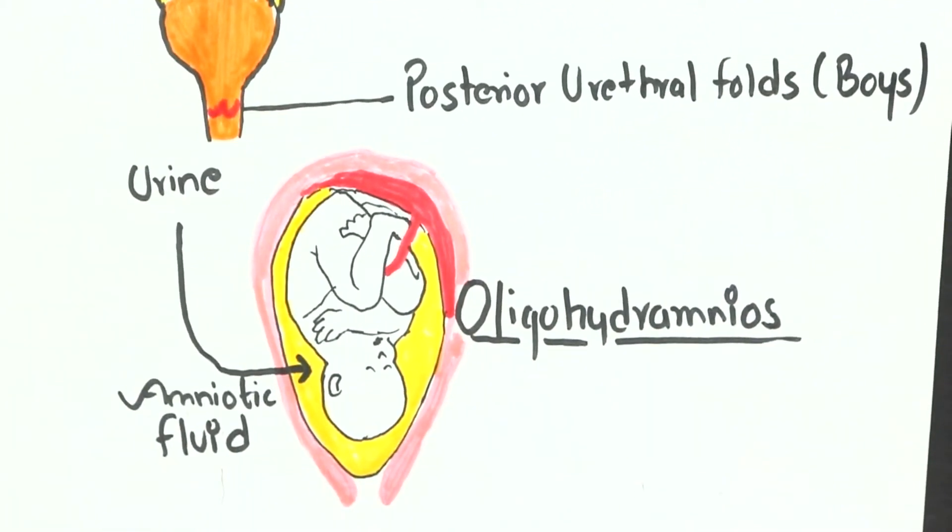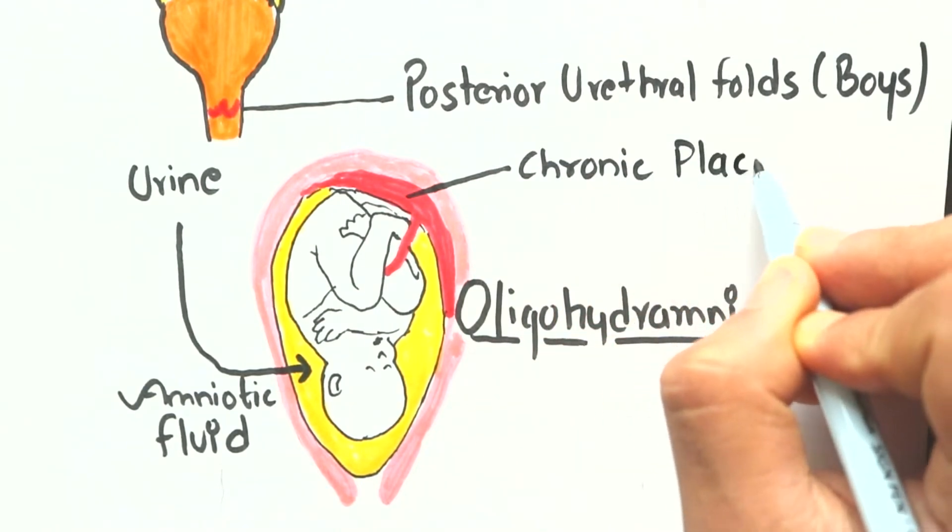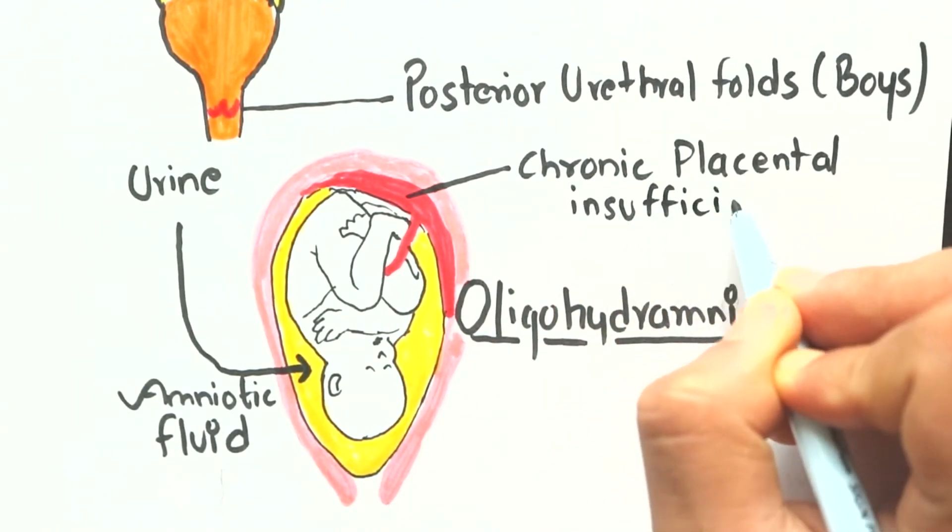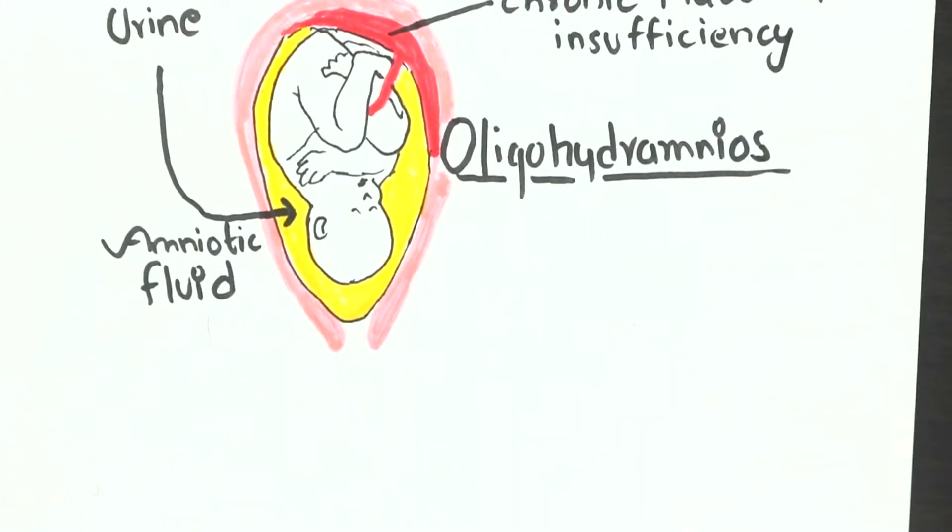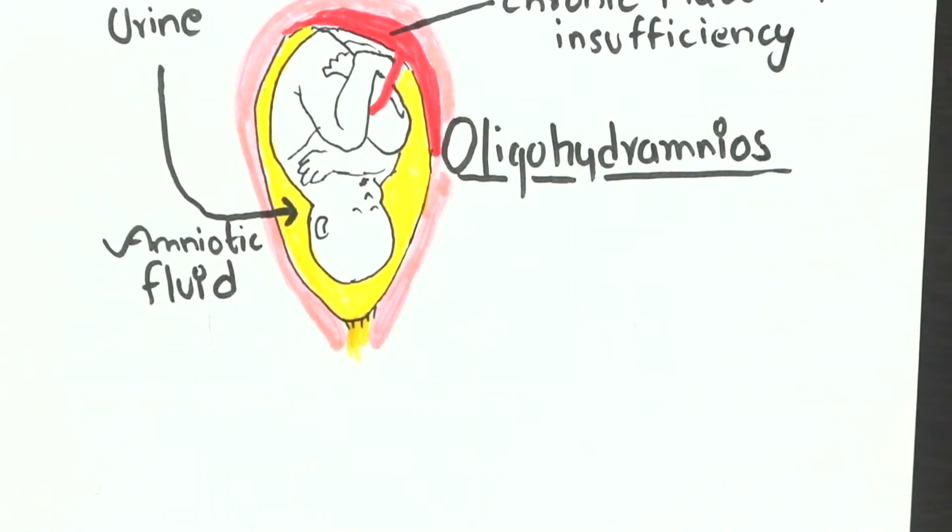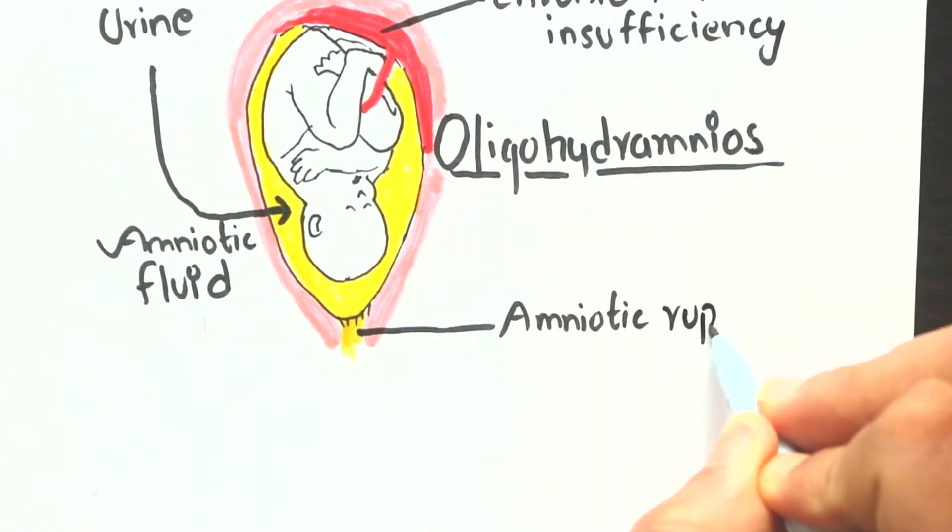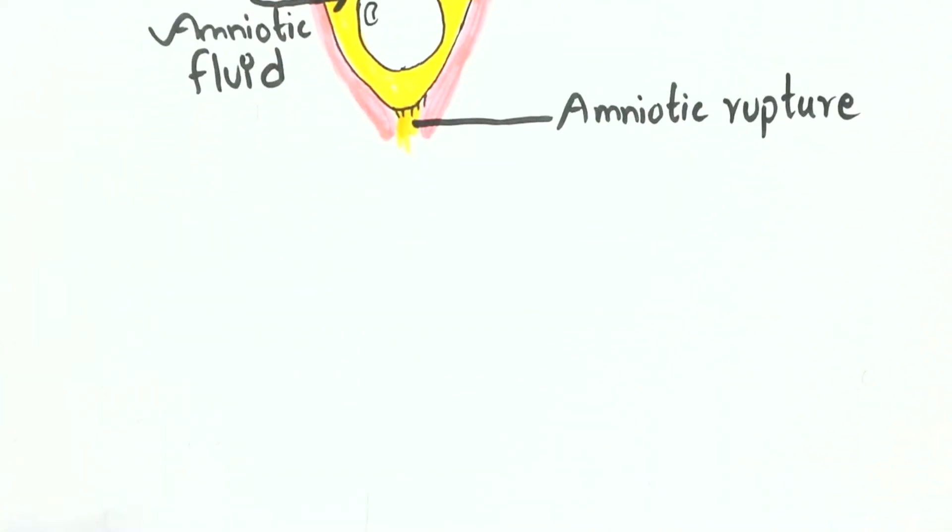Next one is chronic placental insufficiency, where there is low blood flow from the placenta, meaning the fetal kidneys receive less blood and in turn leads to less urine formation. Or there can be rupture of amniotic membrane which leads to leakage of amniotic fluid. So all of these conditions result in oligohydramnios.